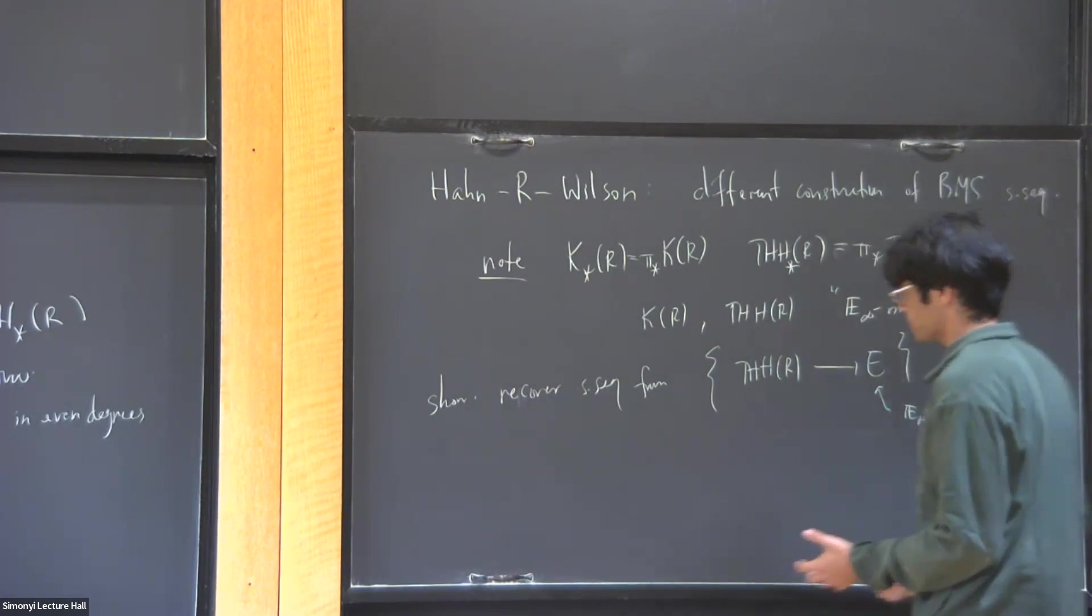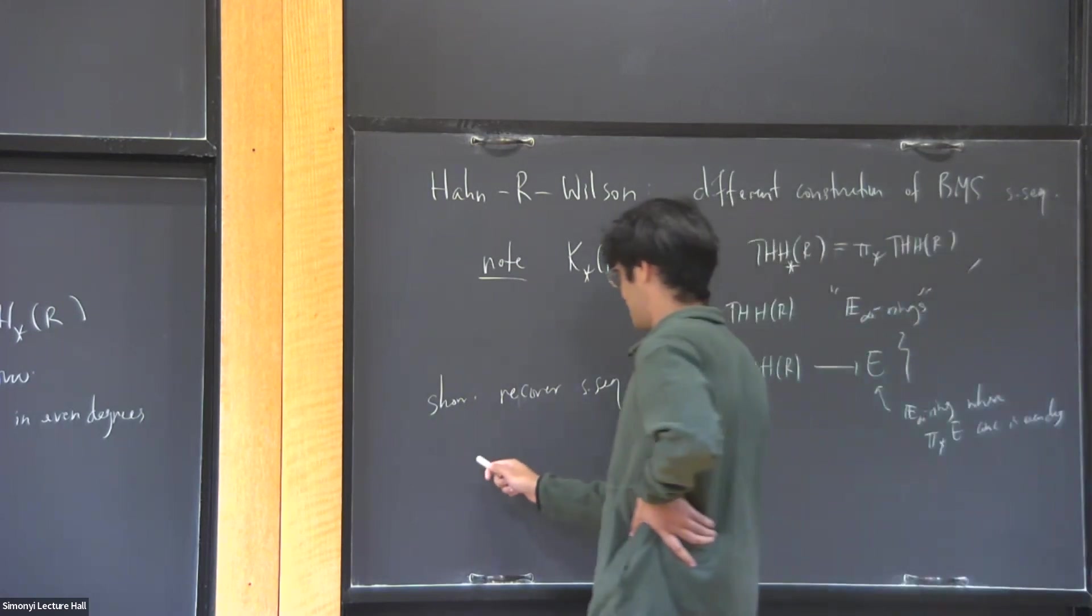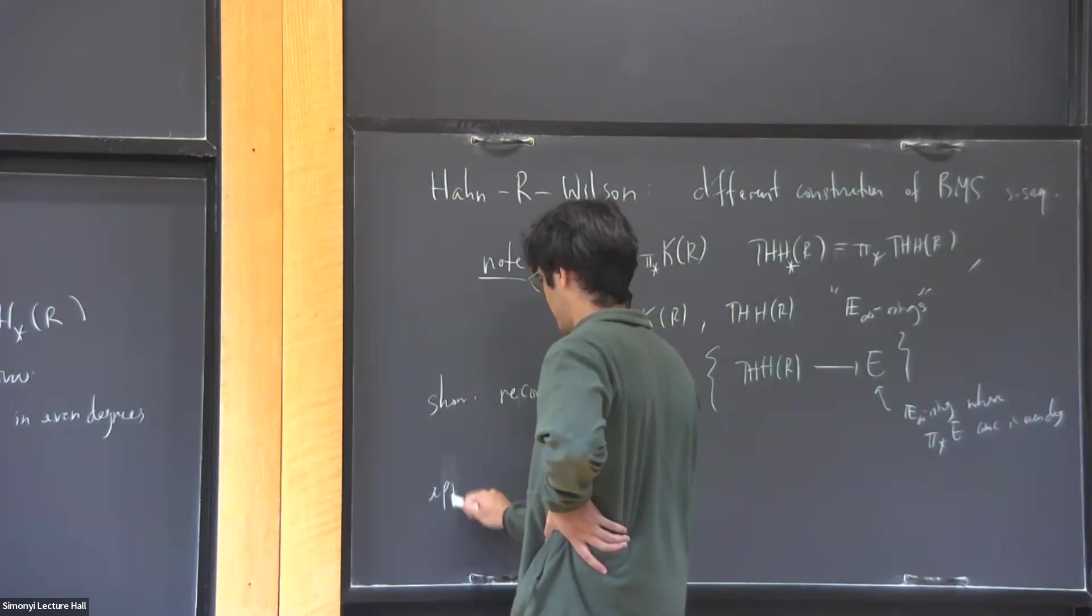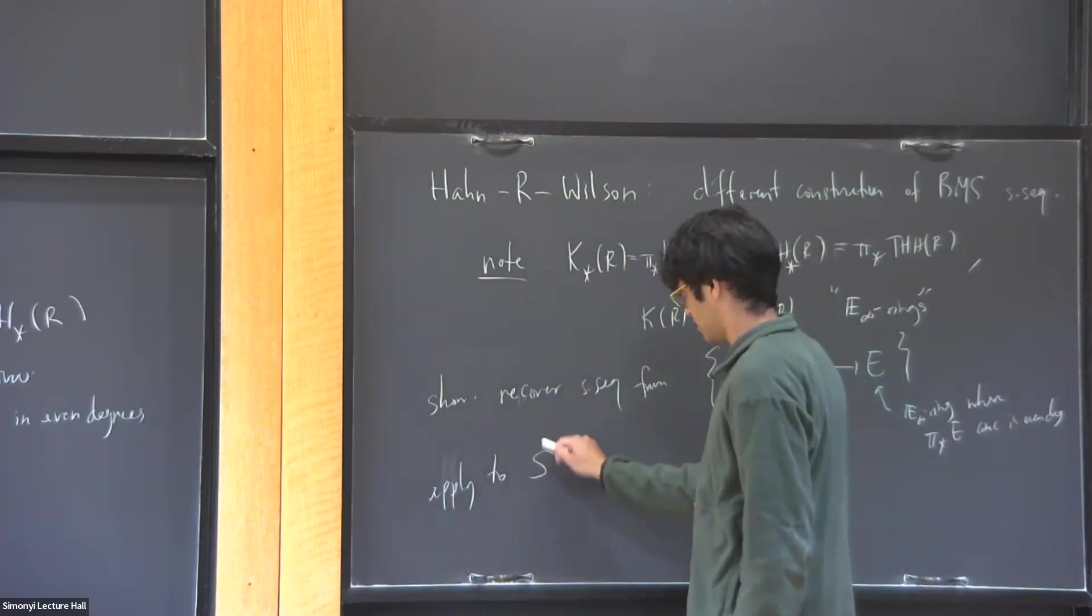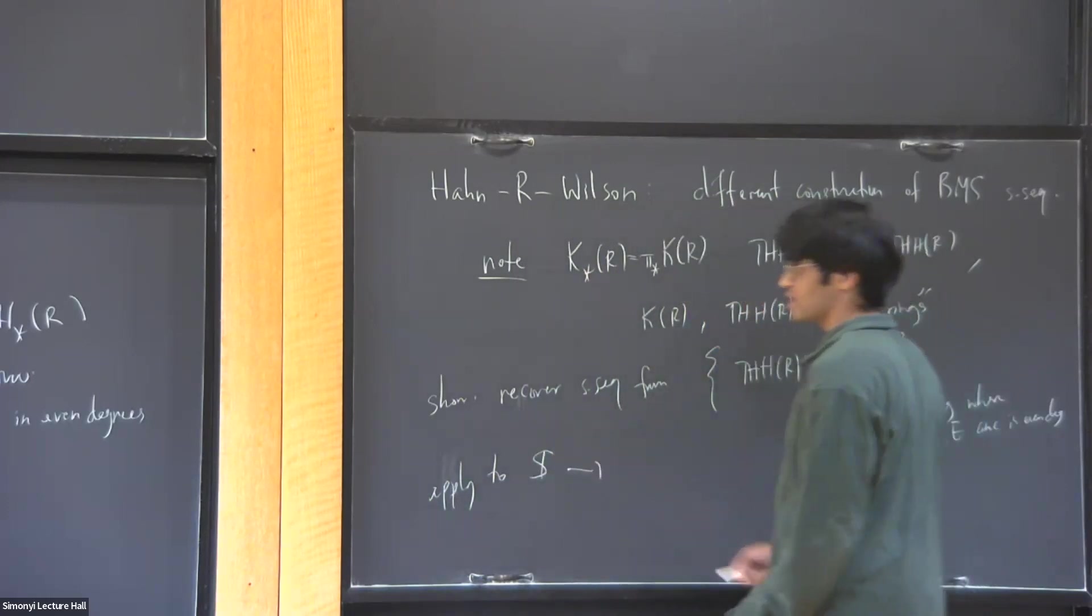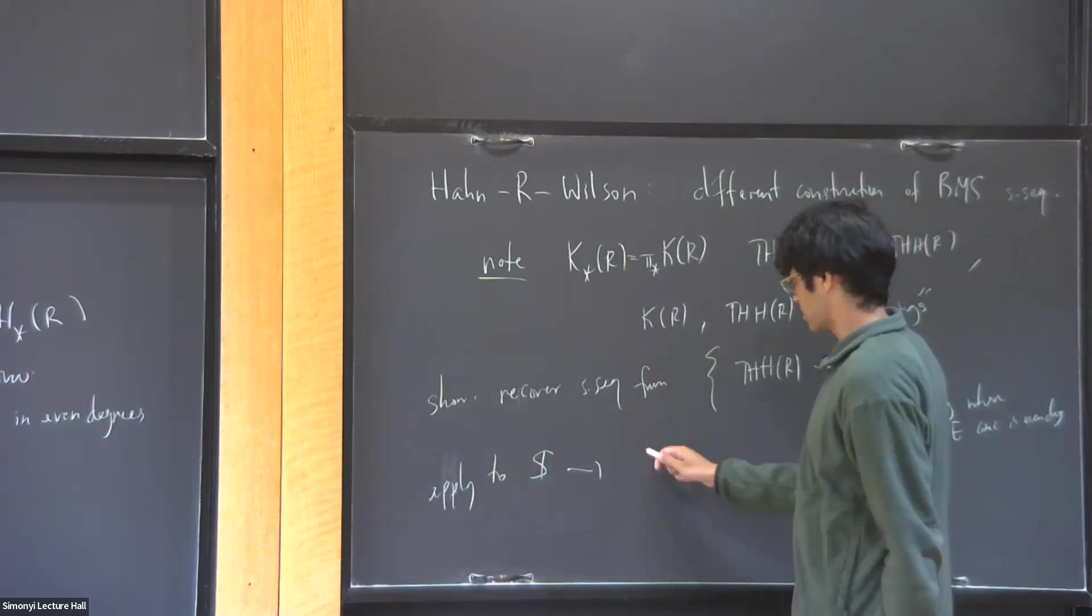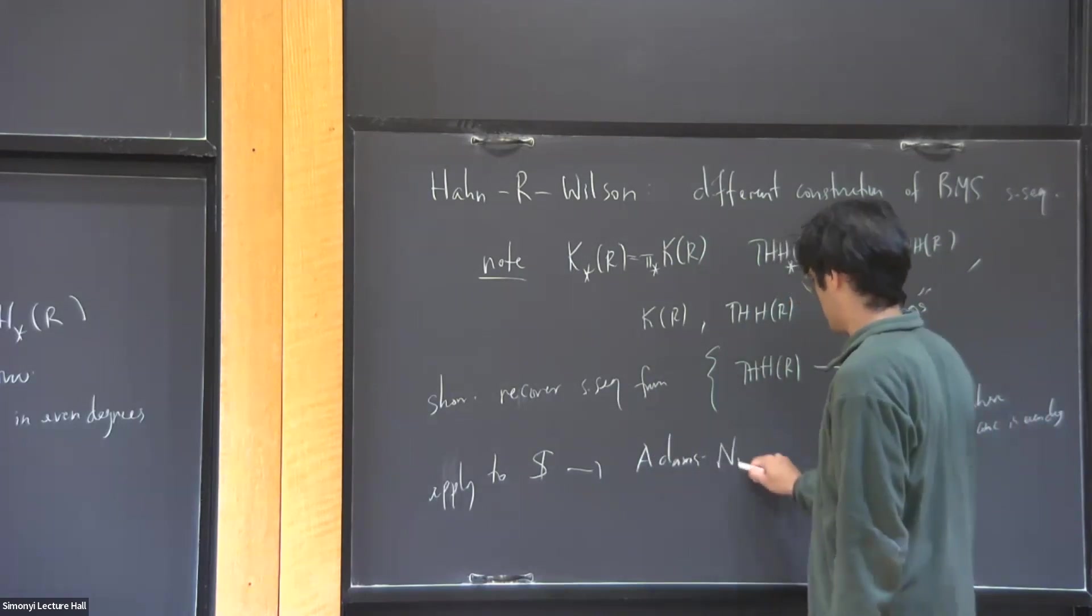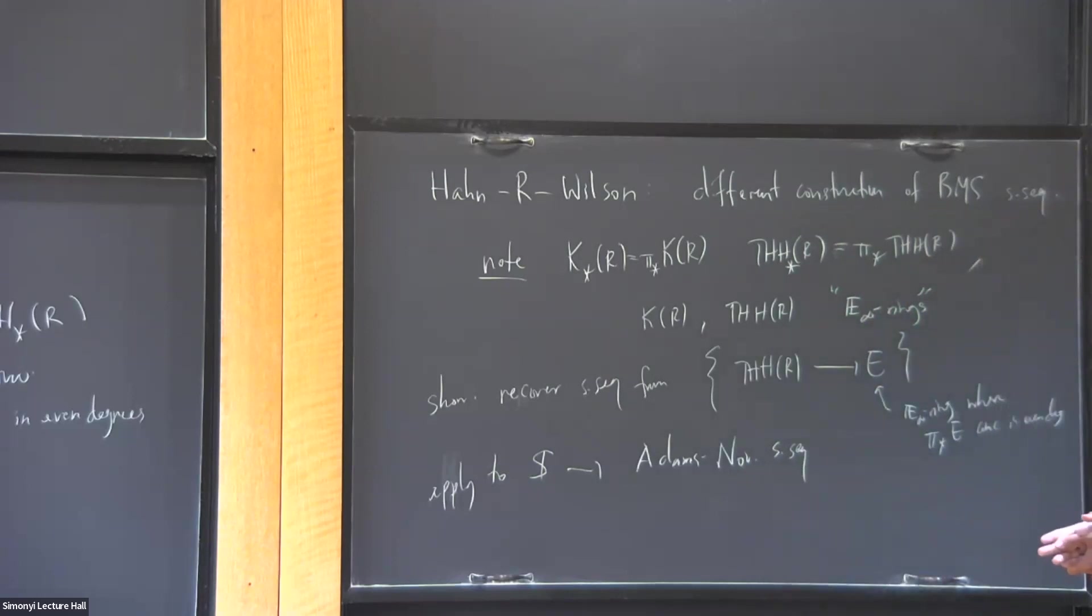And so maybe I'll note that this is, it's so formal that you can apply it all the time. So for example, you could apply this idea to the initial infinity ring, the sphere spectrum, which I'll also discuss if you were there and you get a spectral sequence, which is not part of this story, but it's a part of an older story. It's you get the Adams-Novikov spectral sequence, one of the basic building blocks in homotopy theory. So somehow this construction...